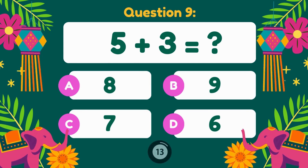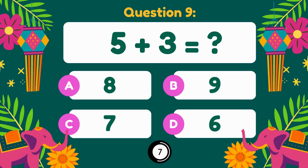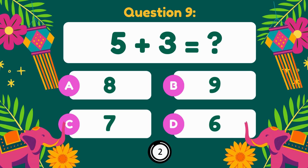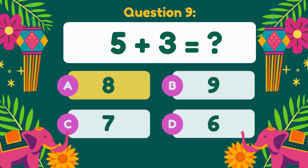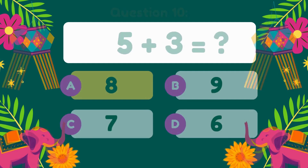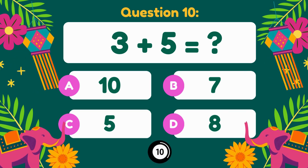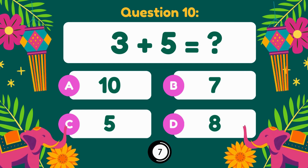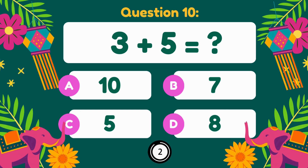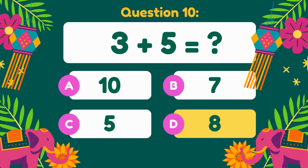5 plus 3 is equal to 8. 3 plus 5 is equal to 8.